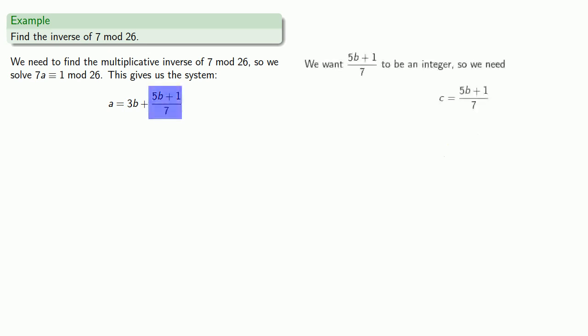We want (5b plus 1) over 7 to be an integer, and so we need some integer c to be equal to 5b plus 1. Solving this for b, we find b is equal to c plus (2c minus 1) divided by 5.